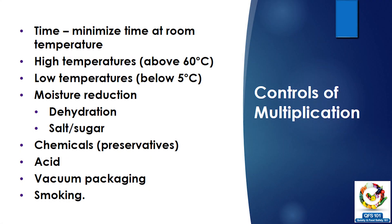So coming to the controls — don't give time to microorganisms to multiply. If you want to keep food, keep it at high temperatures above 60 degrees Celsius or at low temperatures. Reduce moisture by using dehydration methods like salt or sugar. Salt is one of the oldest methods of controlling spoilage from microorganisms — in very olden days people used to apply salt or spices on food to dehydrate it and store it for a long time.